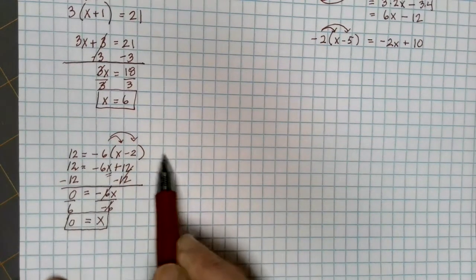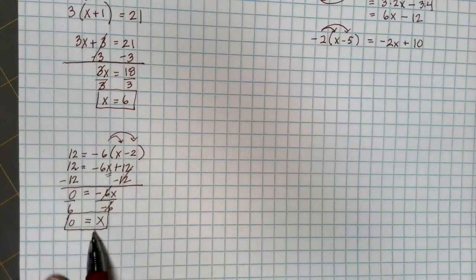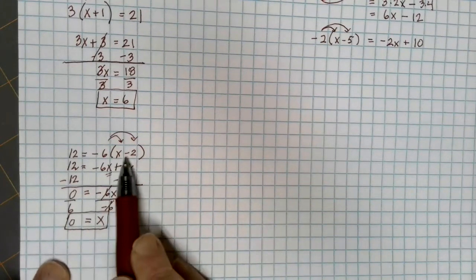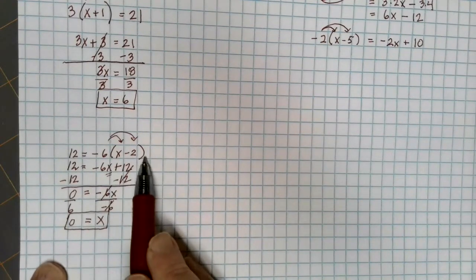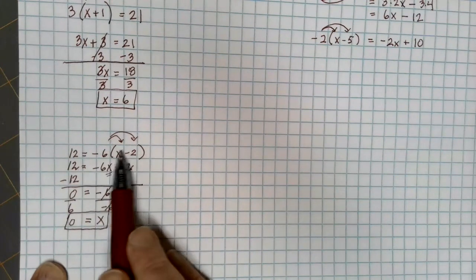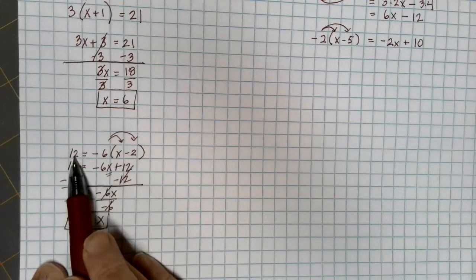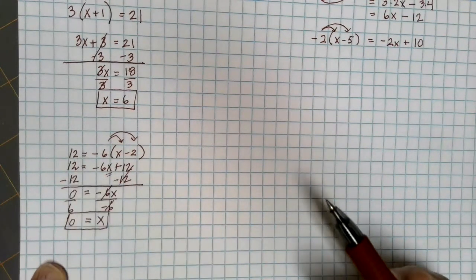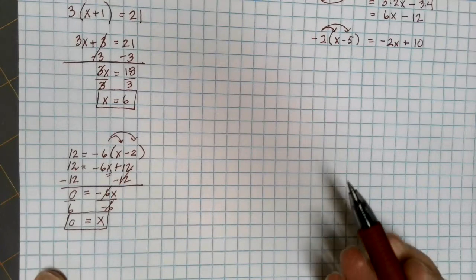You can take your answer and plug it back in to verify. 0 minus 2 would give me a negative 2 inside the parentheses. Negative 6 times negative 2 is positive 12, and my solution checks out.